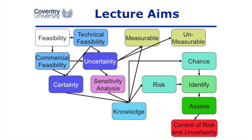We're trying to determine what risk is, and we often get into trouble thinking about uncertainty. We start off with the feasibility of the project — the technical feasibility and the commercial feasibility. Some things are certain, like the laws of physics or the purchase price of something, and some things will be uncertain and we don't really know about them. It might be that we can do some sensitivity analysis or some measurements to try and gain some knowledge about these uncertain things. When we have this knowledge, we can actually treat this as a risk because, having identified it, we can assess it — it's measurable in some way — and we can manage that risk or uncertainty.